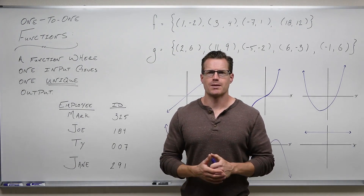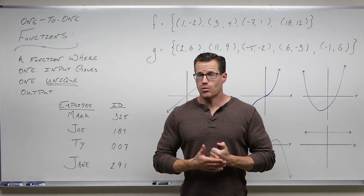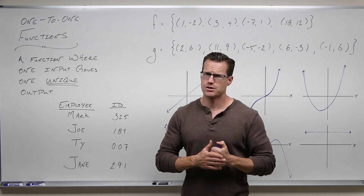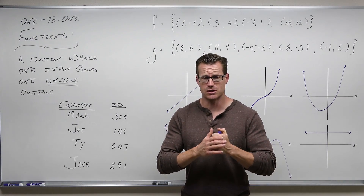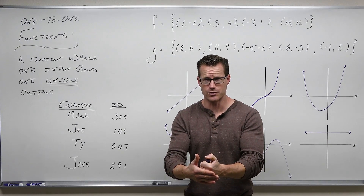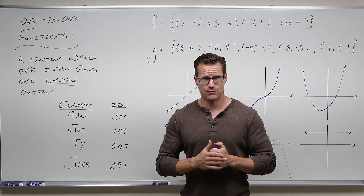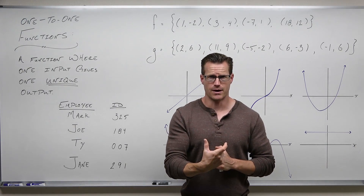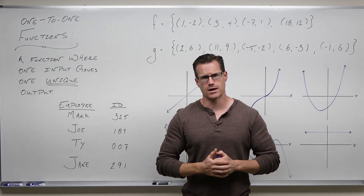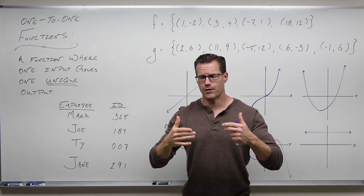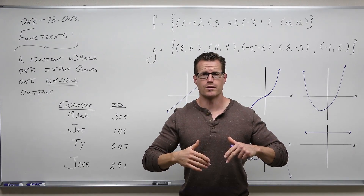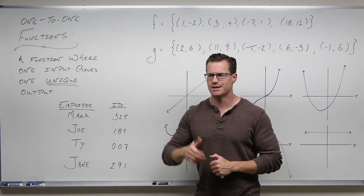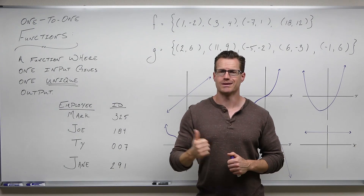We're going to explore that to see what it looks like and why we have to have one-to-one functions for inverses to work. In an inverse, we are going to switch the x value with the y value for every inverse that we deal with. So we need functions to be one-to-one in order that their inverses are also functions. One-to-one function means one input, one unique output — it doesn't happen again.